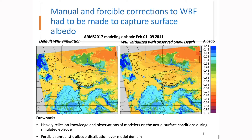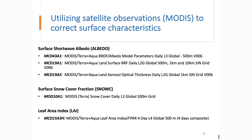The limitations of ground observations led us to the idea of using satellite-based data for this purpose. Here comes the Moderate Resolution Imaging Spectroradiometer — the MODIS dataset that we utilize for this purpose. Our objective is to improve WAF performance with respect to surface albedos, snow cover, and vegetation fractions. We utilize certain MODIS datasets listed in this slide; most are at either 500-meter or 1-kilometer resolutions, which is considerably good for regional modeling scale, with daily temporal resolution.